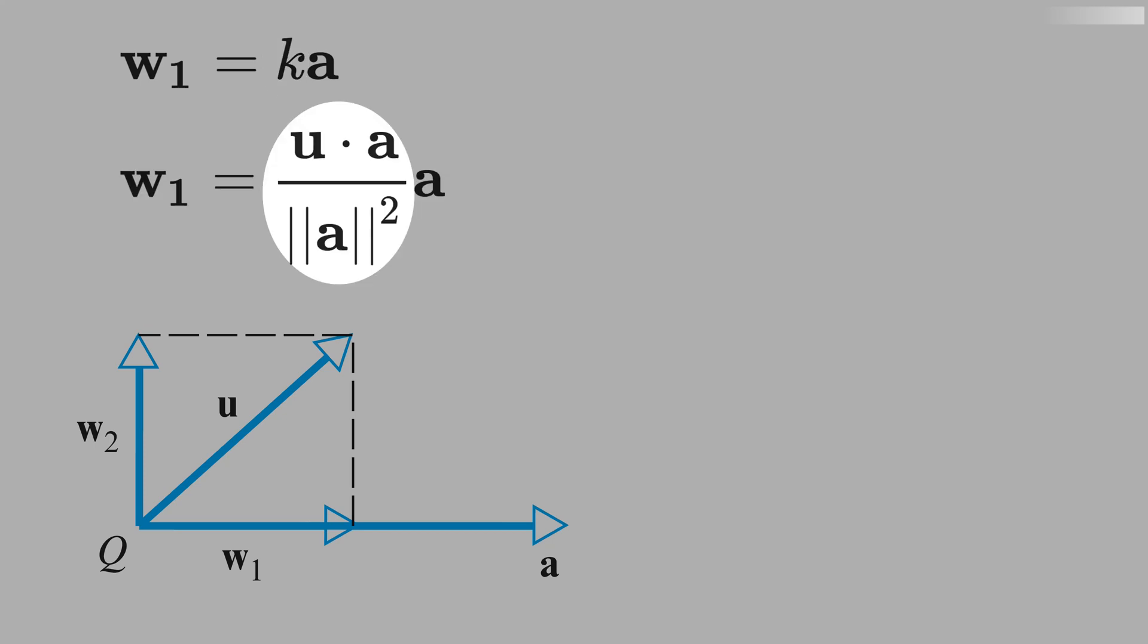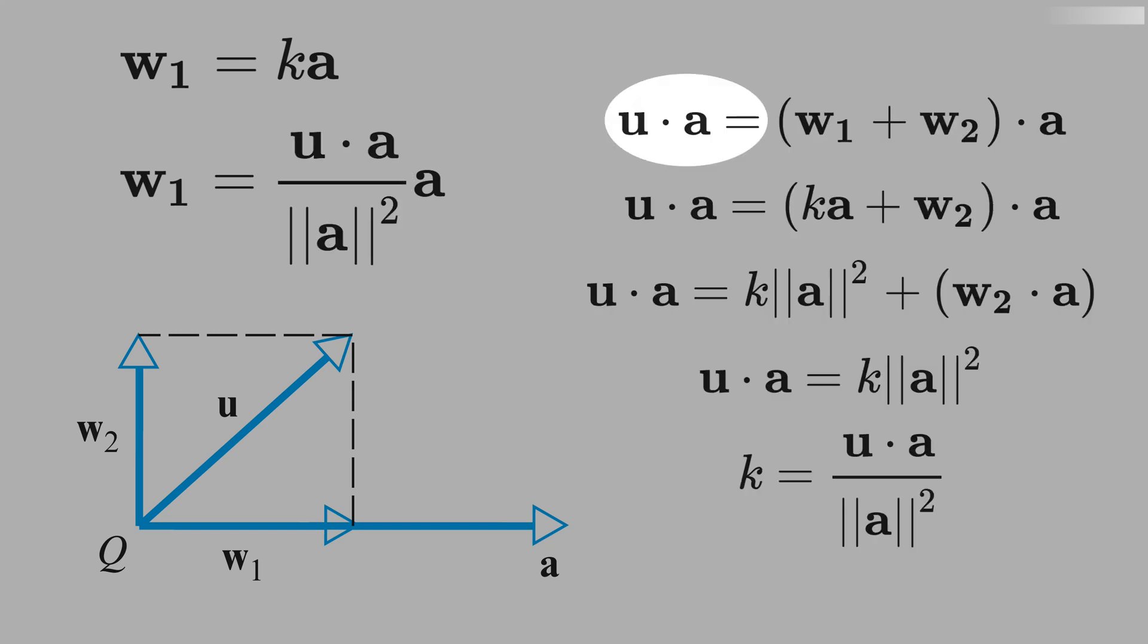We know what this k is because we saw the formula before, but let's derive it. Let's start with the dot product of u and a, and we know that u is w1 plus w2. We can see here that if we sum up w1 and w2, you get u.